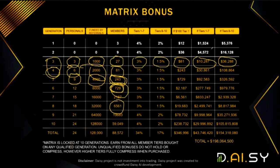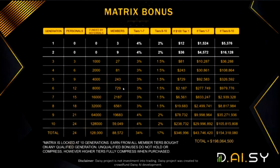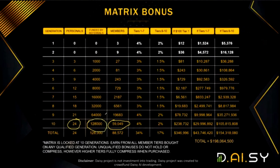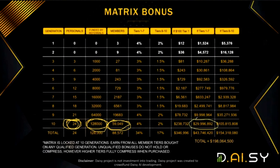In the perfect scenario, if you fill all 10 generations and have 24 direct frontliners that generate at least $128,000 in turnover — it doesn't have to be exactly 24 — and you have 59,000 people in your 10th generation, the maximum you can earn from this matrix is $198 million. That is the maximum perfect scenario.